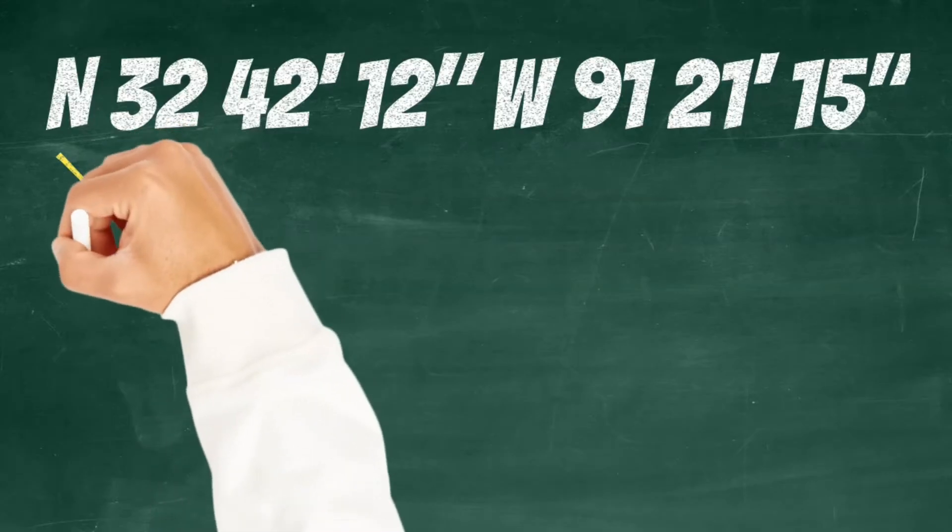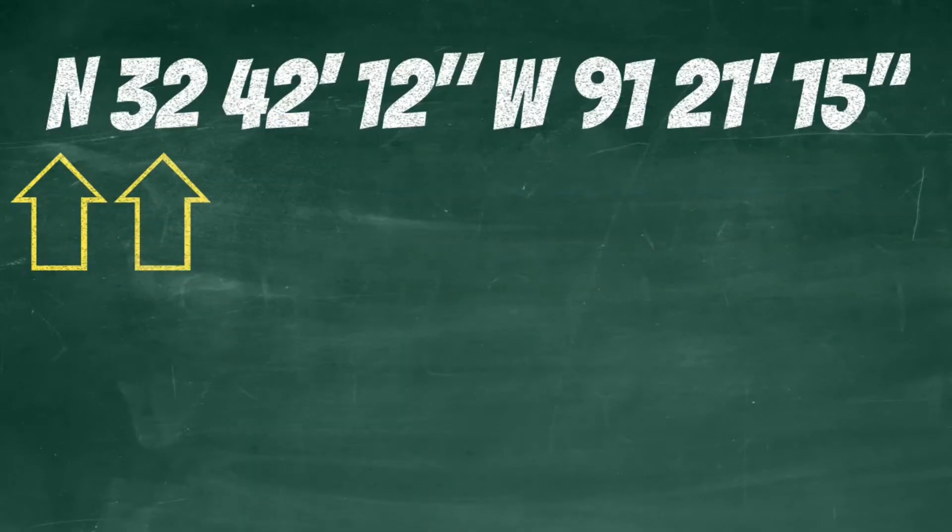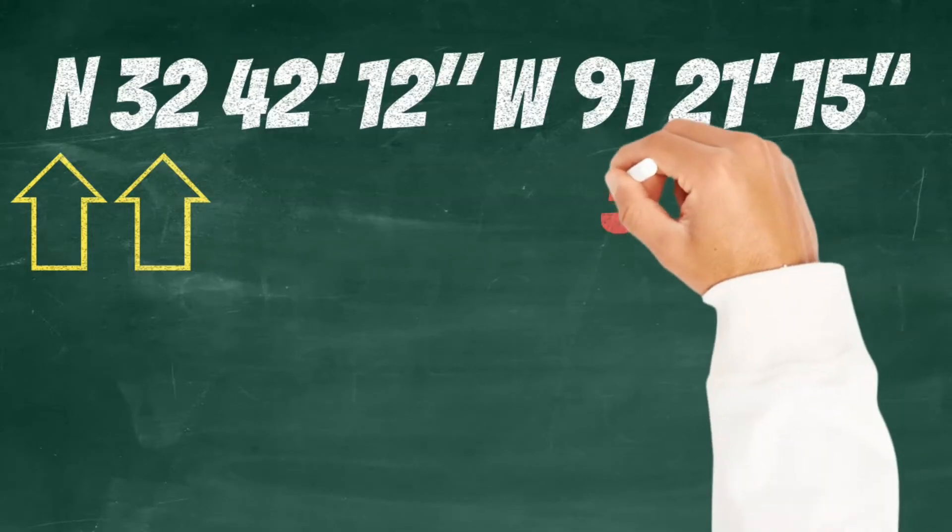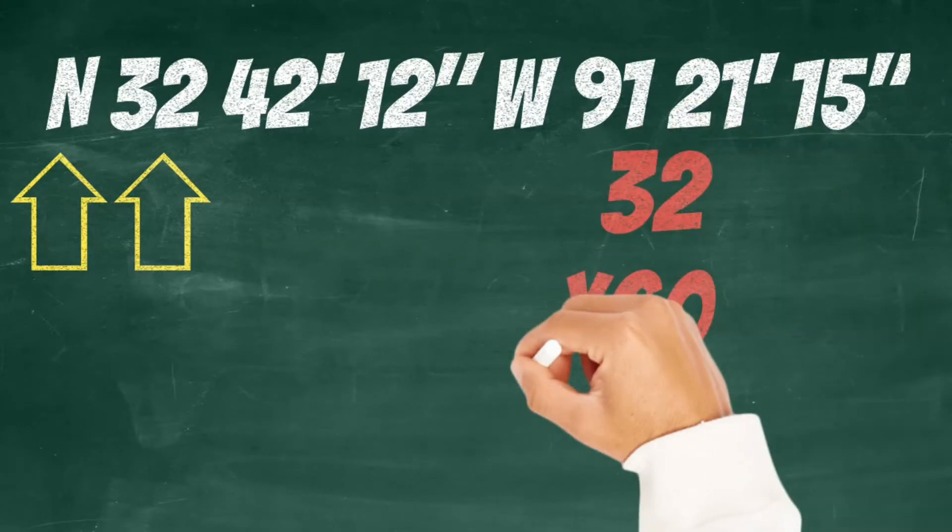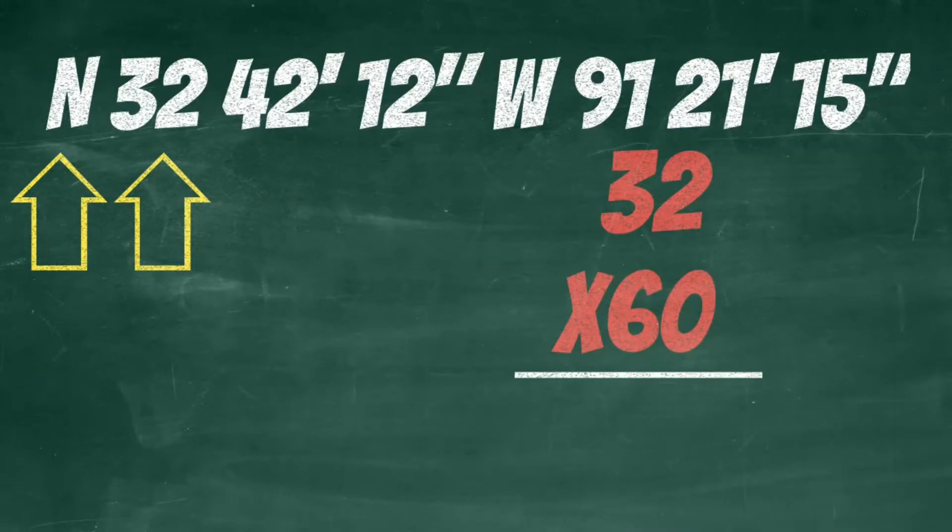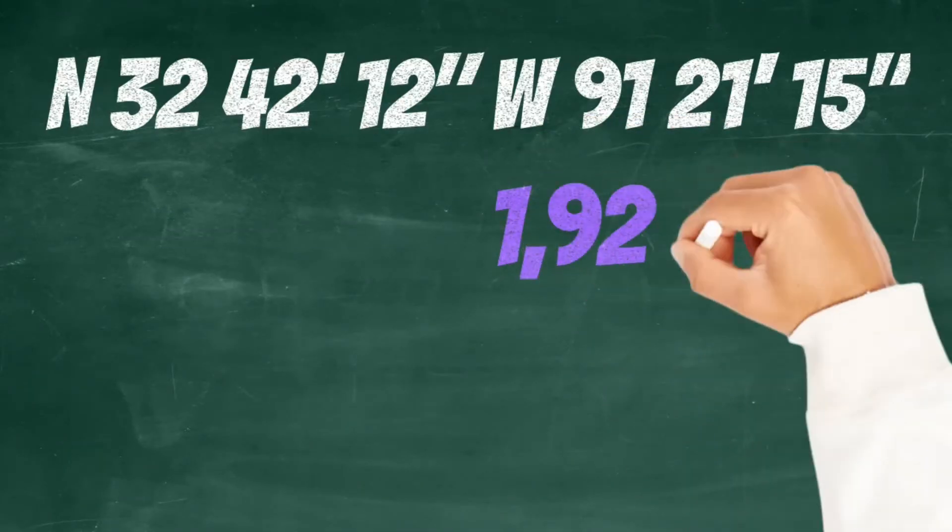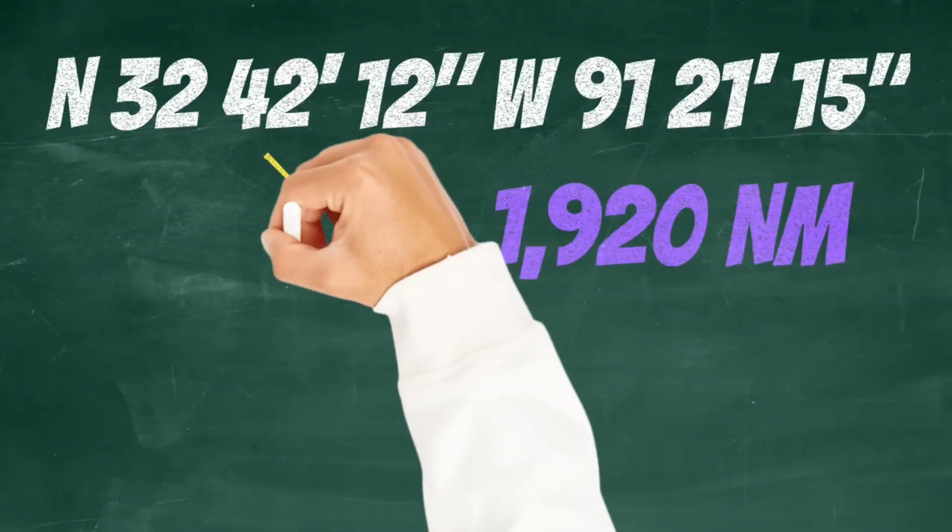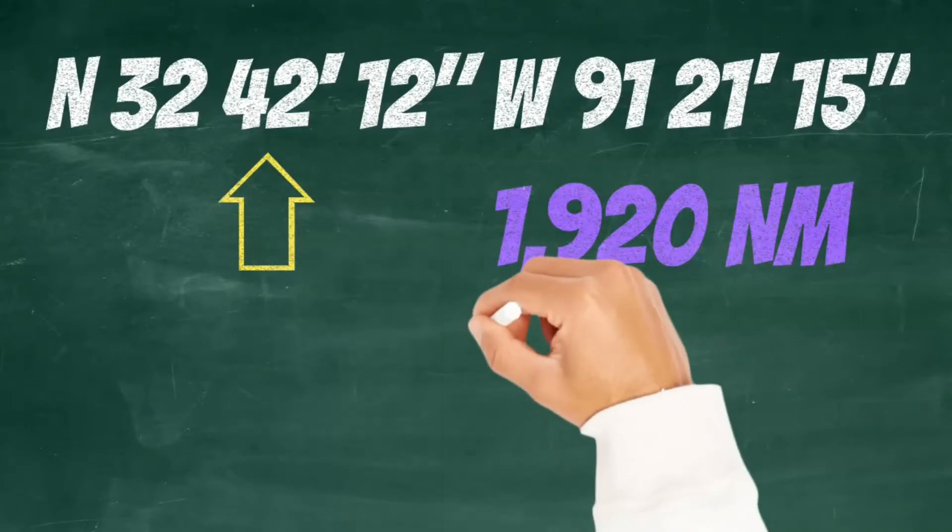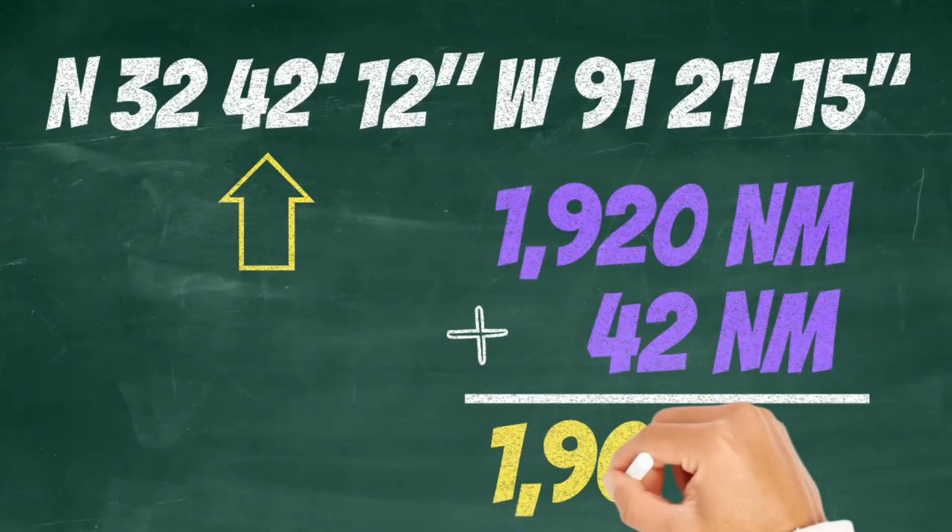First this N lets us know that we're in the northern hemisphere. Then this 32 lets us know that we're 32 degrees north of the equator. Now if you remember from earlier every degree has 60 minutes in it and every minute equals one nautical mile. So we can take this number and multiply it times 60 to get our distance from the equator. So at 32 degrees north we're 1,920 nautical miles from the equator. But not so fast we've still got some numbers left over. This next set of numbers indicates our minutes. So we can just add this to our total distance from the equator. And this gives us a total distance of 1,962 nautical miles.